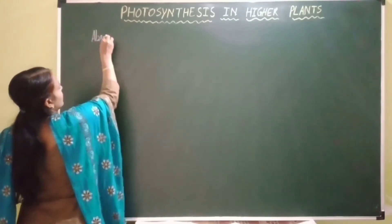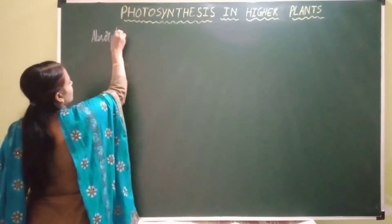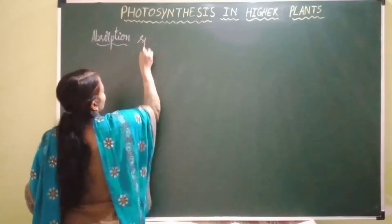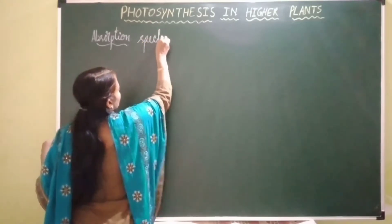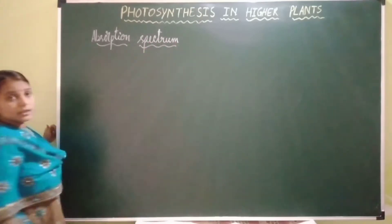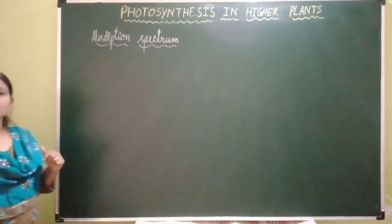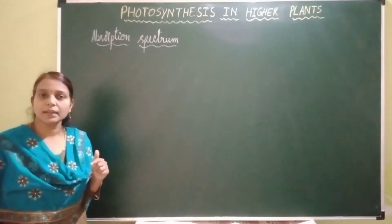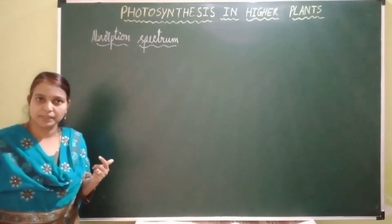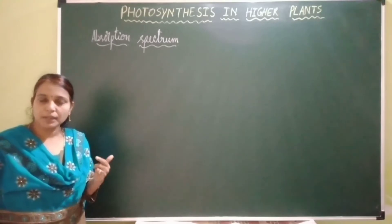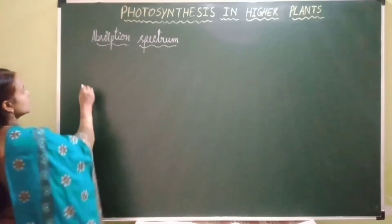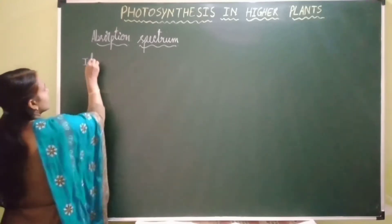Absorption spectrum is the graphical representation of the degree and portion of different wavelengths of sunlight absorbed by different pigments — that is chlorophyll a, chlorophyll b, and carotenoids. That is called absorption spectrum.